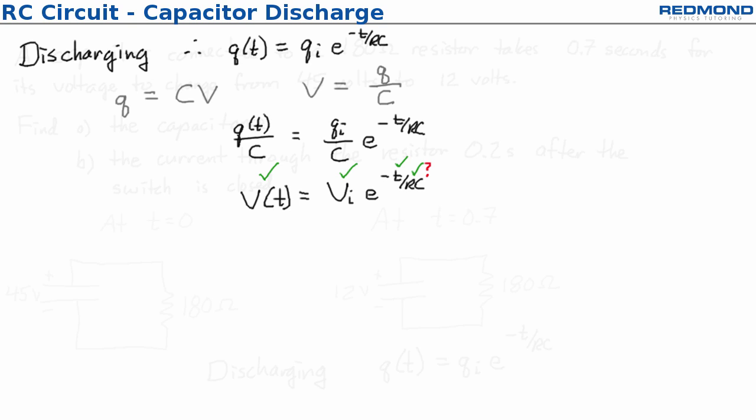So all I really need to do now is substitute. So I substitute 12 volts at 0.7 seconds is equal to the initial voltage 45 times e to the negative and then we have 0.7 seconds divided by 180C and then this is 180 ohms times the capacitance.